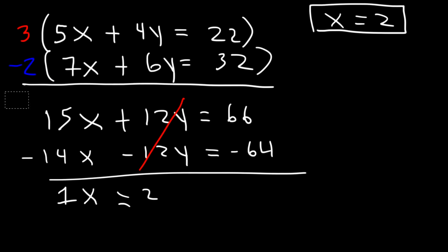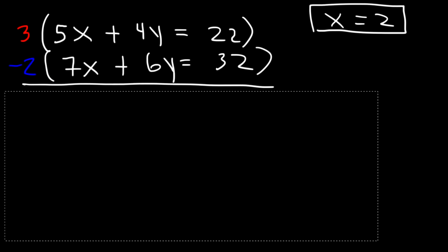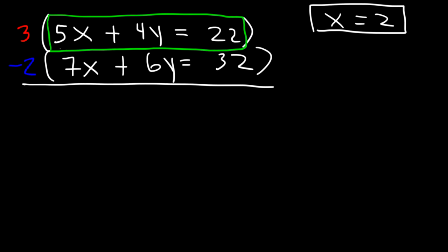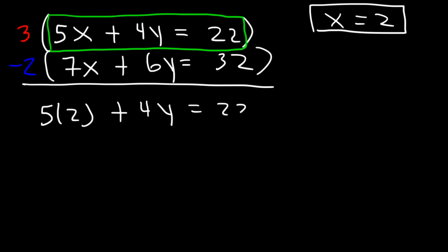So we can get rid of this. Now let's use the first equation without the 3 involved. Let's replace x with 2 and find the value of y. 5 times 2 is 10. Next, we need to subtract both sides by 10.